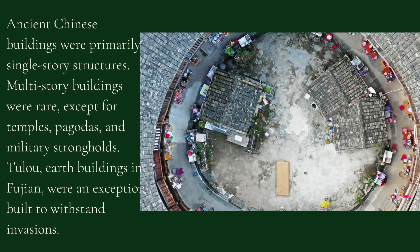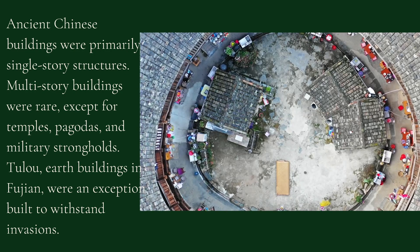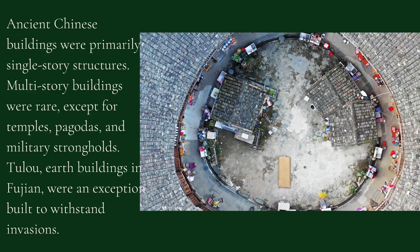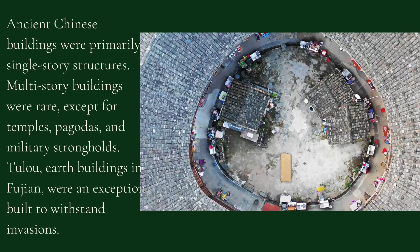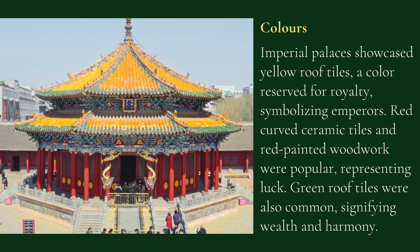The ancient Chinese buildings were primarily single story. Multi-story buildings were made for temples and pagodas. In addition to this, military strongholds were also built in a multi-story style. These buildings were also built as urban buildings so that they could withstand invasion and protect the structure.